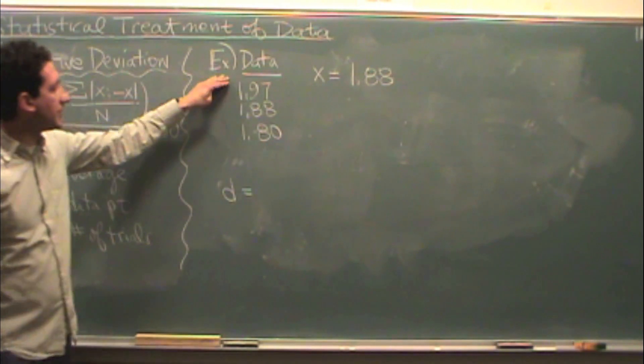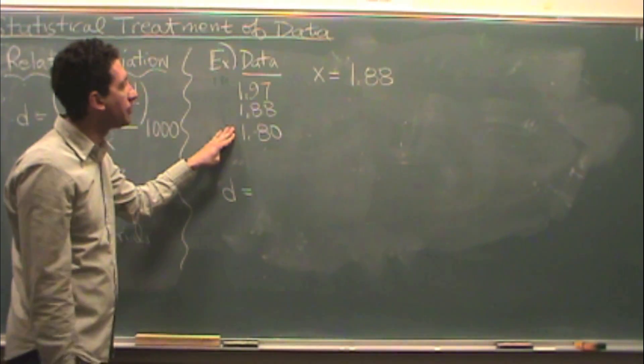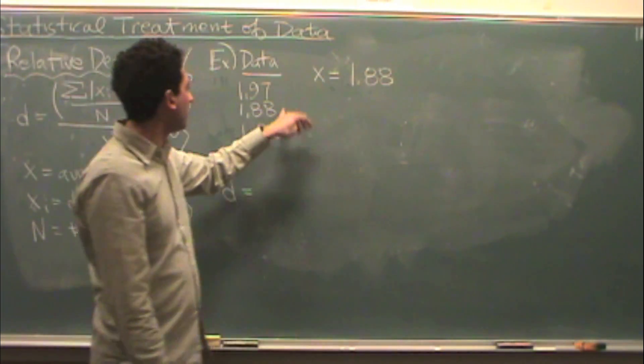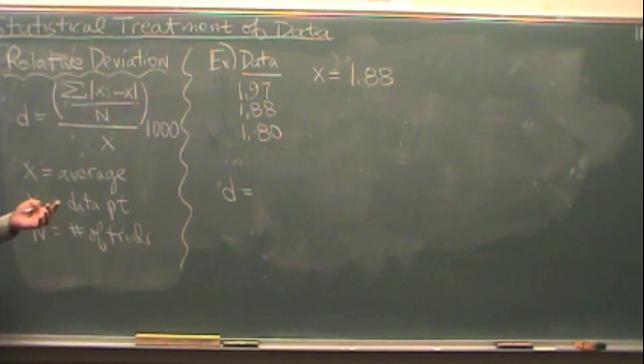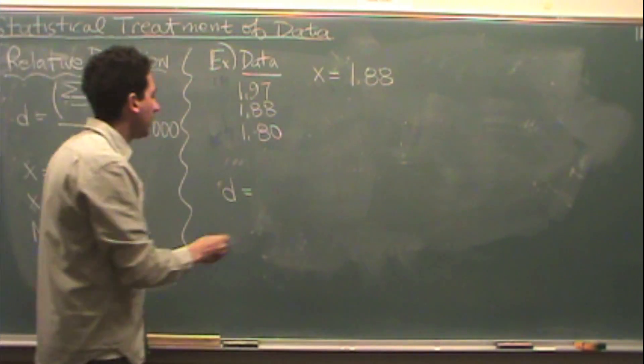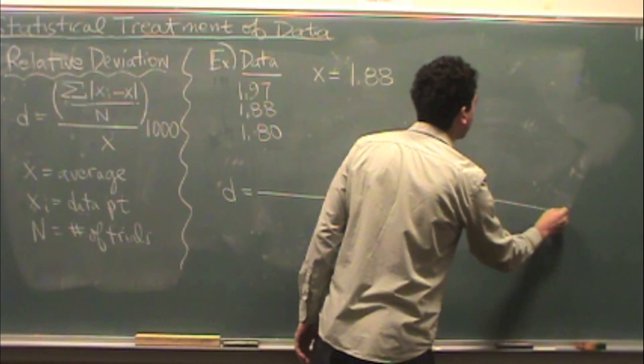Let's take a look at an example. I have these three data points. I took the average, these divided by the number three. The average happens to match one of my data points. It doesn't matter if it does or does not. Now, let's take a look at how this calculation would work.